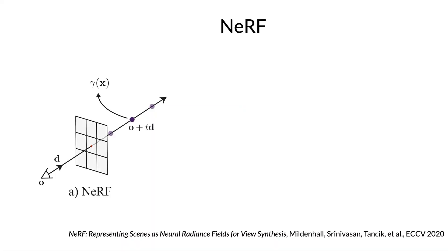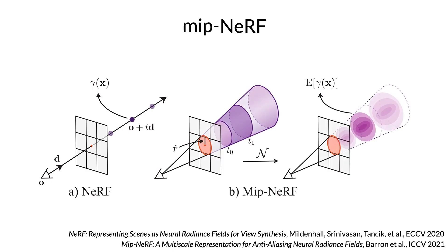Our model is based on NERF, which uses the weights of an MLP to model the volumetric density and color of a scene, and which uses a rendering model that looks a lot like ray tracing. We're building on top of a NERF extension called MIPNERF, which casts cones instead of rays and uses multivariate Gaussians to represent 3D volumes in the scene. This change lets MIPNERF deal with aliasing and scale more easily.